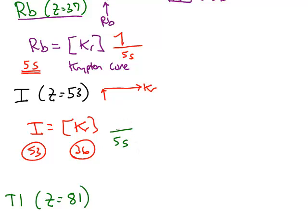After krypton came the 5S subshell. That would take us to number 38, strontium. After the 5S, now we're in the D block of the periodic table. And we're in the second row down on the D block. So if you follow on your periodic table, we're at yttrium, number 39. That's the second row in the D block.